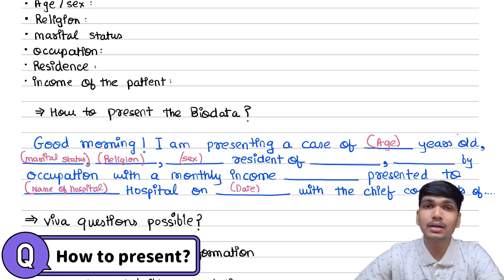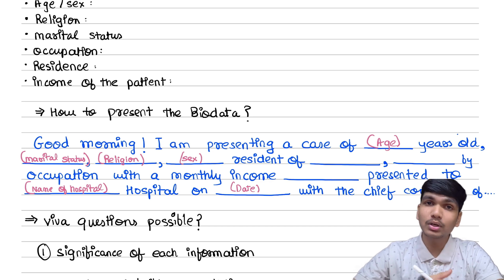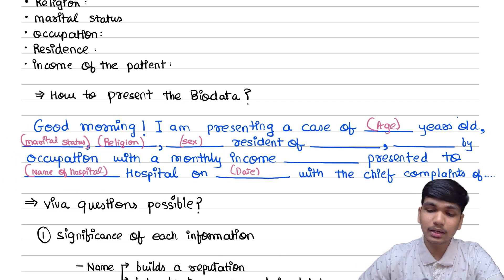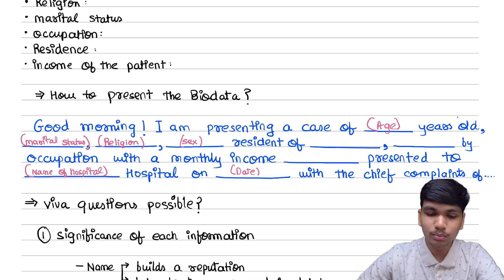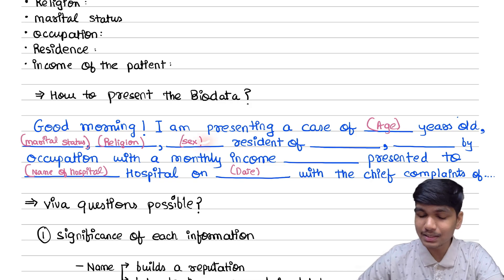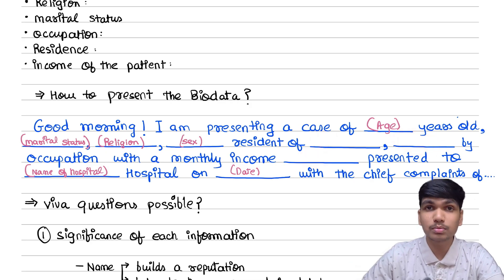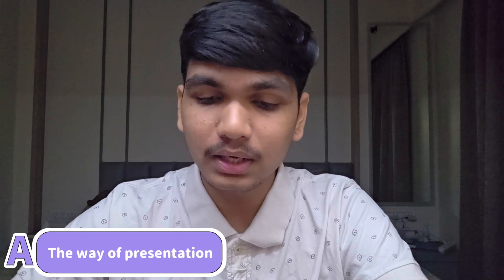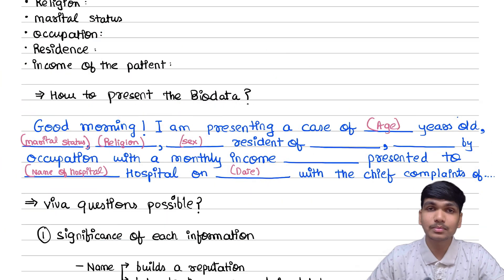Now how do we present this bio data in a formal way? You should always present your case in proper English and in a proper format. For example: 'Good morning. I am presenting a case of 53 years old, married, Hindu male, resident of Vadodara, laborer by occupation with a monthly income of 15,000 per month, presented to GMRS Medical College Hospital on 6th December 2025 with the chief complaints of...' So this is how you shall present your bio data.